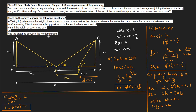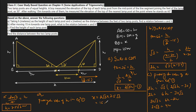For the final part, we find the distance between the two lampposts, which is x. We substitute the value of h into equation one. Putting h equals 7.5 root 3 into x equals 2 root 3 h: x equals 2 root 3 times 7.5 root 3. That gives 2 times 7.5 equals 15 and root 3 times root 3 equals 3, so x equals 15 times 3 equals 45.